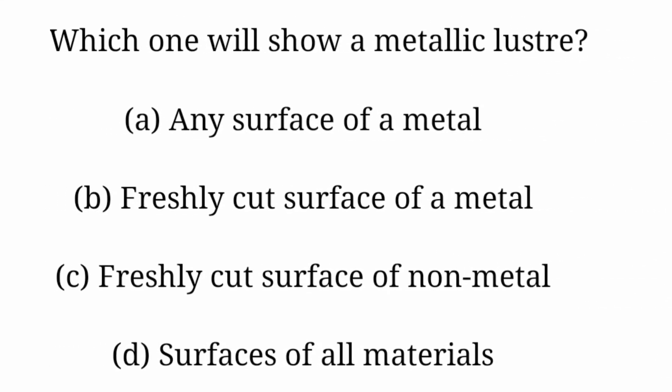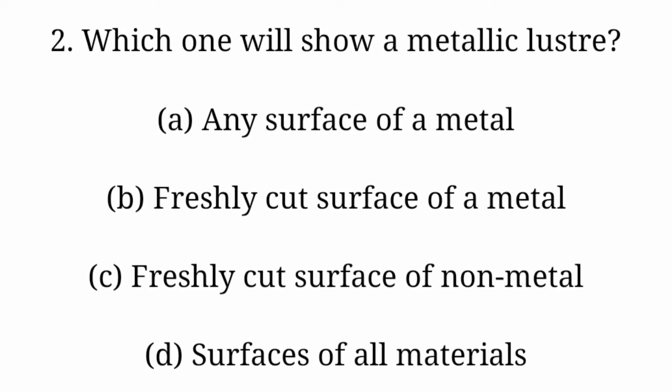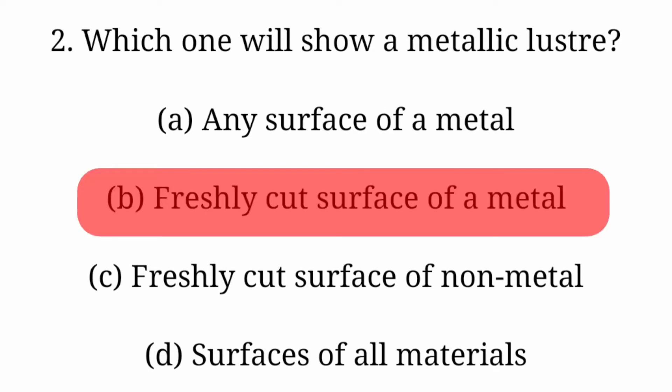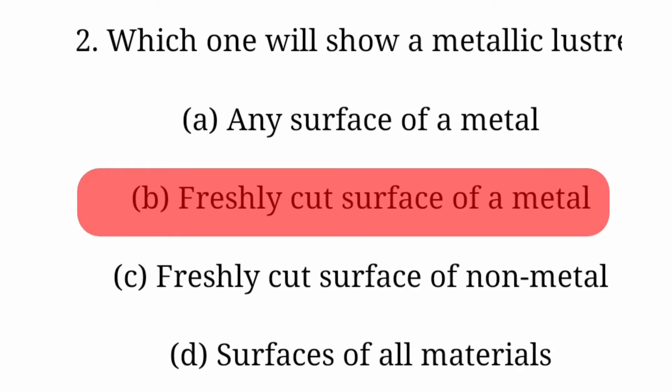Question 2: Which one will show a metallic luster? Option A: Any surface of a metal. Option B: Freshly cut surface of a metal. Option C: Freshly cut surface of non-metal. Option D: Surfaces of all materials. Answer is Option B: Freshly cut surface of a metal.